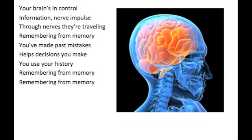Your brain's in control, in formation, nerve impulse through nerves they're traveling. Remembering, remembering — you've made past mistakes, helps decisions you make. You use your history. Remembering, remembering.